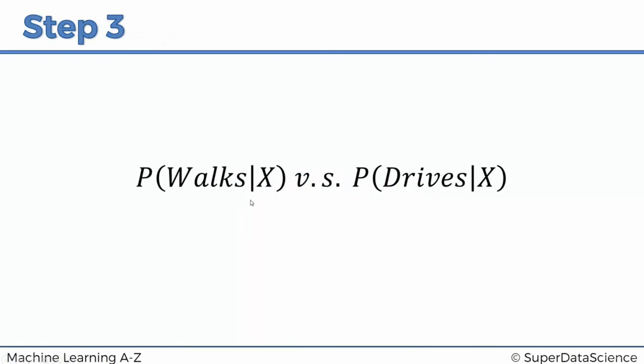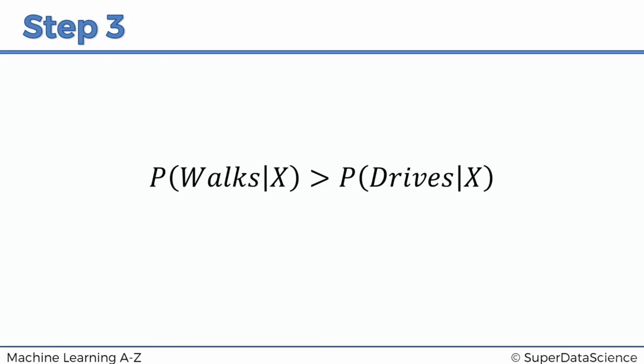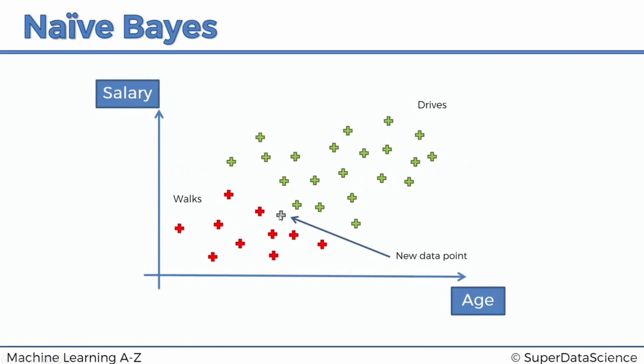Now step three: we compare the probability of walking (75%) versus driving (25%) given features X. Since 75% is greater than 25%, it is more likely that the person with features X is someone who walks to work. There is still a 25% chance they drive, but we classify this point as a person who walks to work. That is how the Naive Bayes algorithm in machine learning works. I hope you found this tutorial useful — this has been a step-by-step and simple explanation of a complex concept. I look forward to seeing you next time.